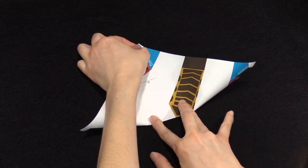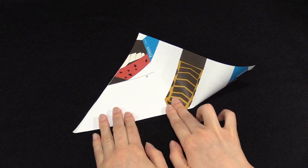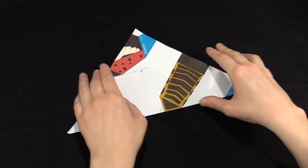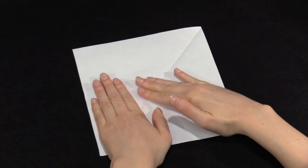Fold the paper in half along the diagonal and unfold. Make sure that you start from the center and fold out. This will give you a crisp, even fold.